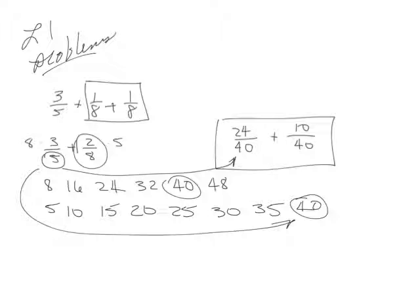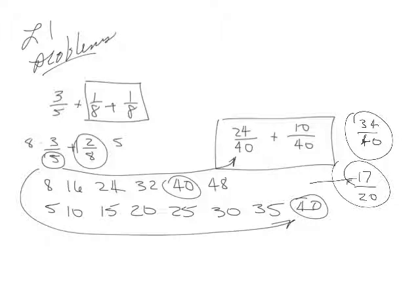Now when you're doing these, remember when we get 34 over 40, that when these two are both even numbers, they can be reduced. So we'll take half of 34, half of 40, and we get 17 over 20. And that cannot be reduced any further, because 17 is a prime number.